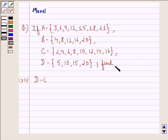and D equals to the set 5, 10, 15, 20, then find the twelfth part that is D minus C. Let us see the solution of this one.